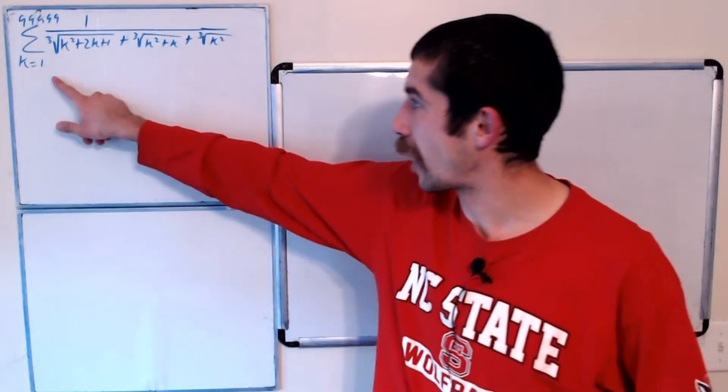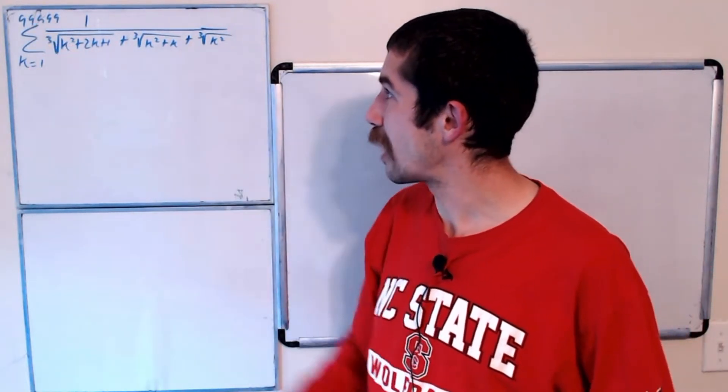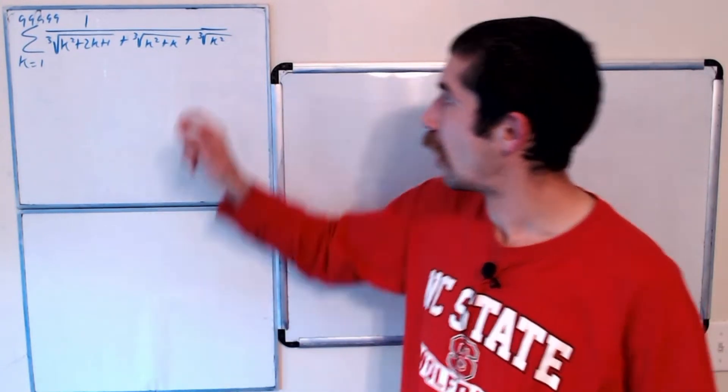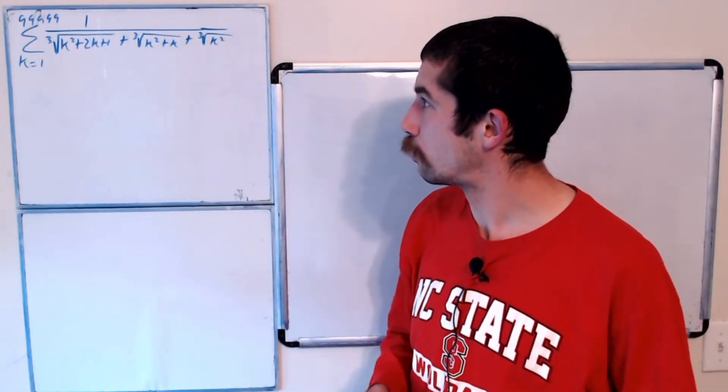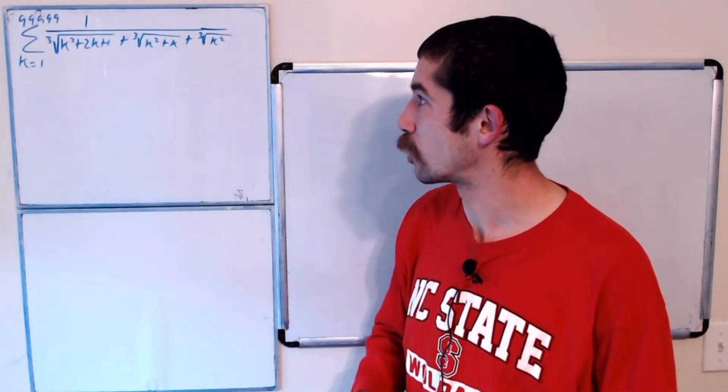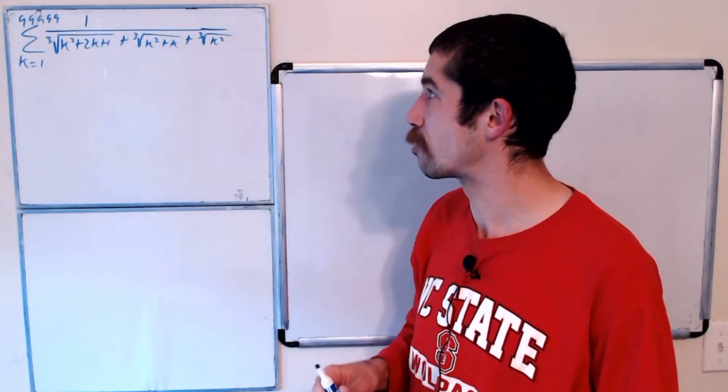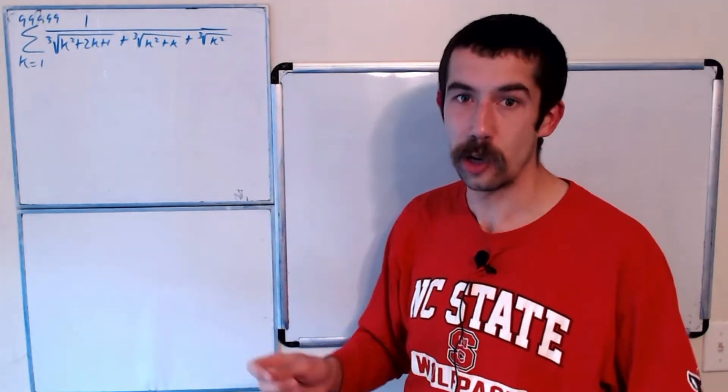Today I'm going to show you that the sum from k equals 1 to 99,999 of 1 over the cubed root of k squared plus 2k plus 1 plus the cubed root of k squared plus k plus the cubed root of k squared.